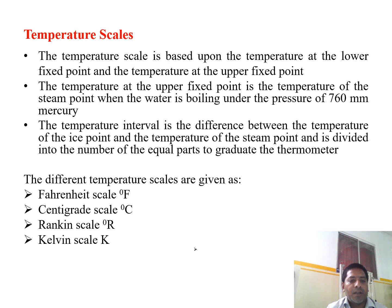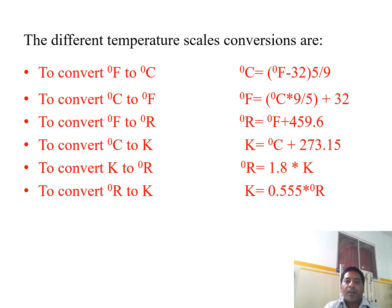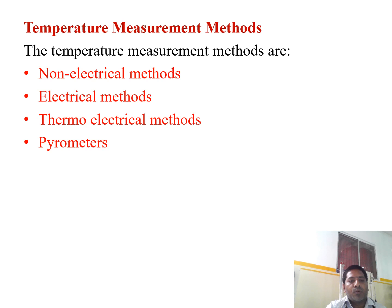The temperature scales are degree Fahrenheit, centigrade, Rankine, and Kelvin. Each scale is based upon the temperature at a lower fixed point and the temperature at an upper fixed point. The upper fixed point is the steam point, where water boils under 760 mm atmospheric pressure. The temperature interval between the ice point and steam point is divided into equal parts. Conversion factors exist between the scales: Fahrenheit to Celsius, Celsius to Fahrenheit, Fahrenheit to Rankine, Celsius to Kelvin, Kelvin to Rankine, and Rankine to Kelvin.